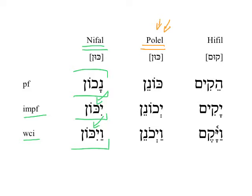We have here not a Piel, but a Polel. The reason it's called this is because the lamed letter reproduces under certain circumstances in this stem, so we call it a Polel — based on the paradigm word pa'al. If we take the word כּוּן (kun) again, 'to establish,' in the Polel the perfect form reduplicates the lamed letter — כּוֹנֵן (konen). In the imperfect, יְכוֹנֵן (yekonen), and in the vav-consecutive imperfect, וַיְכוֹנֵן (vaykhonen). We can see it's the Polel because of the expected shva under the prefix pronoun.